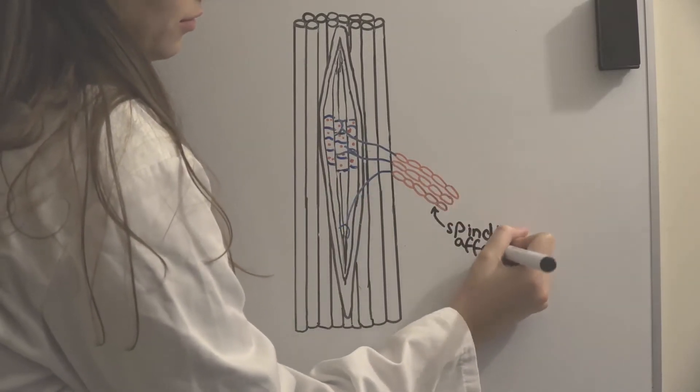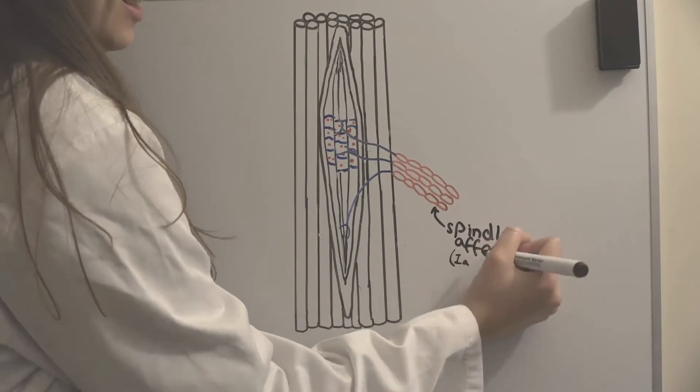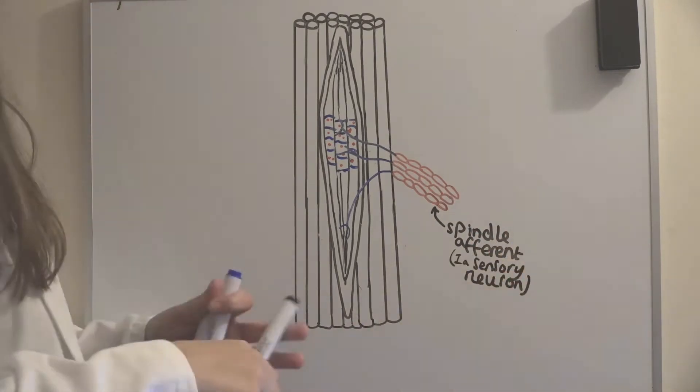Muscle spindles are innervated by IA sensory fibers, which provide feedback to alpha motor neurons, which innervate the muscle.